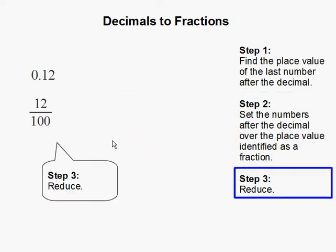In step 3, our last step is to reduce. 12 over 100 can be divided by 4, and that gets us 3 over 25. 3 over 25 cannot be reduced any further, and this completes our problem.